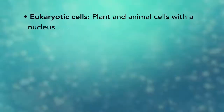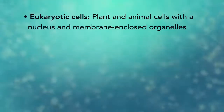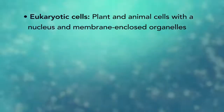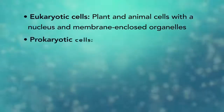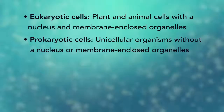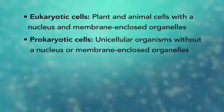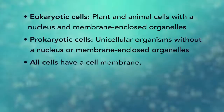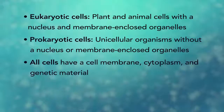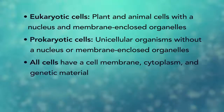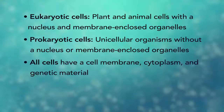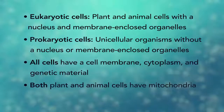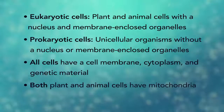In summary, eukaryotic cells are plant and animal cells with a nucleus and membrane-enclosed organelles, while prokaryotic cells are unicellular organisms without these things. All cells have a cell membrane, cytoplasm, and genetic material. And even though only plant cells have chloroplasts, both plant and animal cells have mitochondria.